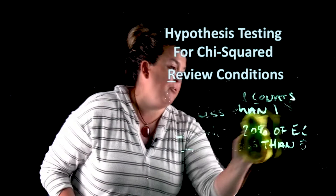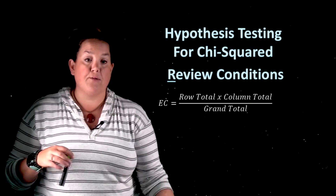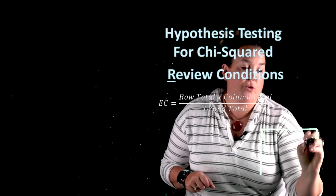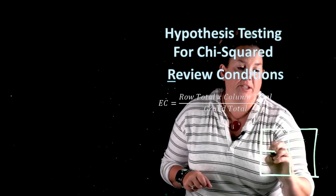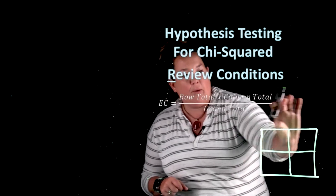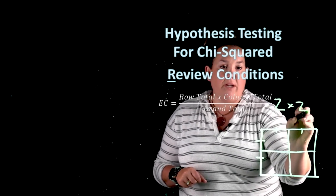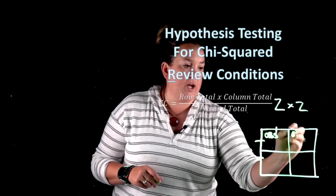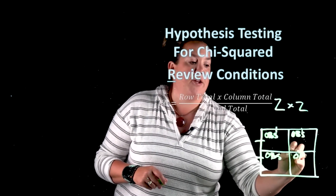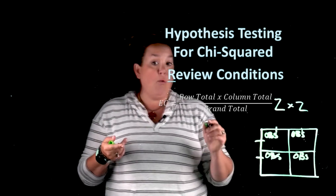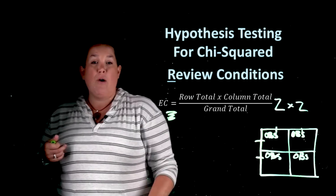Here's our formula for expected counts. When we started this series on two categorical variables, we introduced tables called contingency tables. One variable is represented on one portion of the table and another variable on the other. In each cell of the table, you have an observed count — that's what you actually observe in the data when the contingency table is first created.